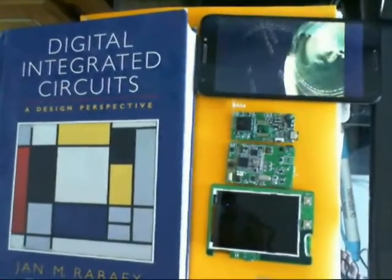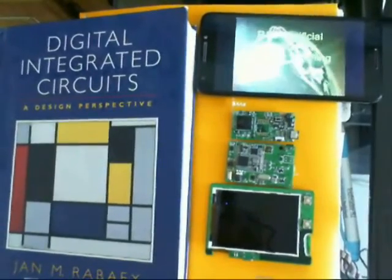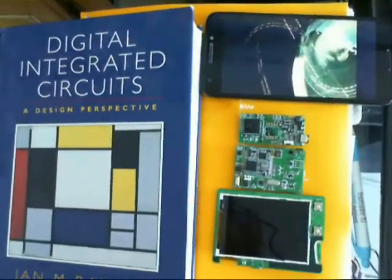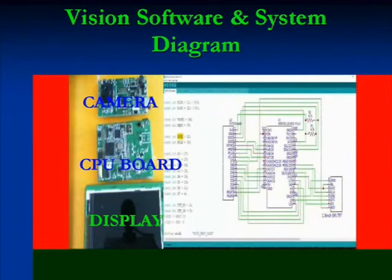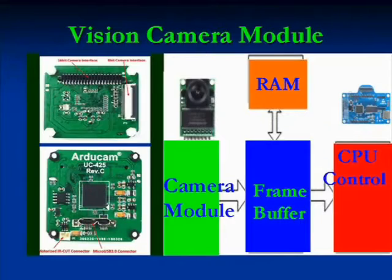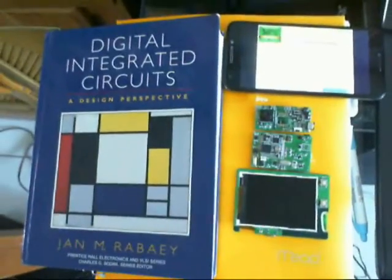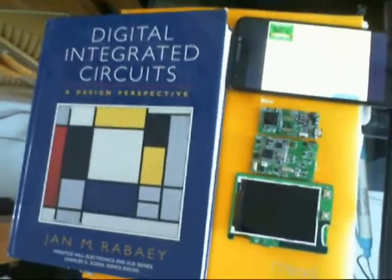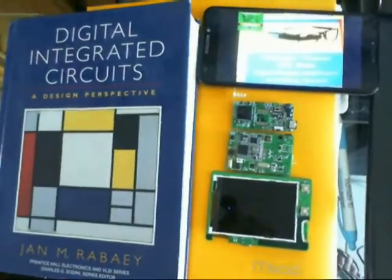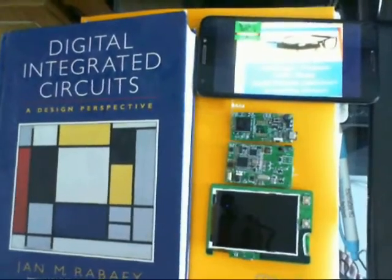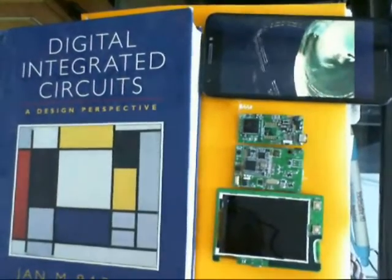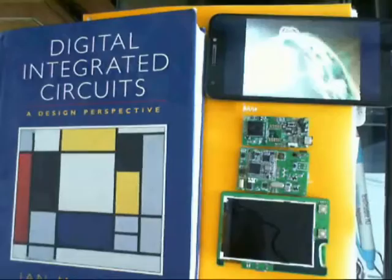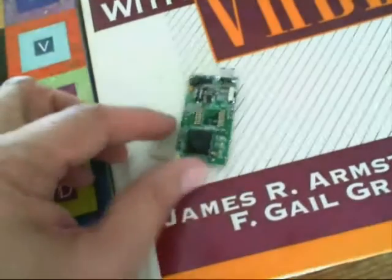Frame rate conversion algorithms such as frame repetition and linear interpolation are an important paradigm discussed here. For motion compensated interpolation, the motion vectors must represent the true motion of objects in the image sequence, since all the interpolation processes are controlled by the motion vectors. In this video system prototype, the input video data are stored in external memory and the output video is put into another video frame or to the digital video encoder for analog video signal generation.